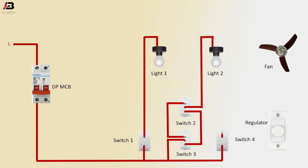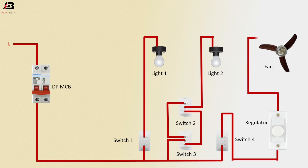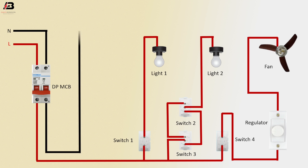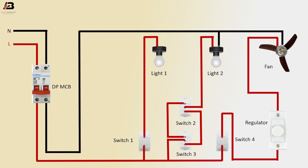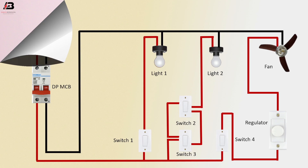Connection outgoing from Switch 4 to Regulator. Phase connection outgoing from Regulator to AC Fan. Neutral connection input to DP MCB. Neutral connection outgoing from DP MCB to all loads — Fan, Light 2, and Light 1. Press the switch on and all loads will turn on.